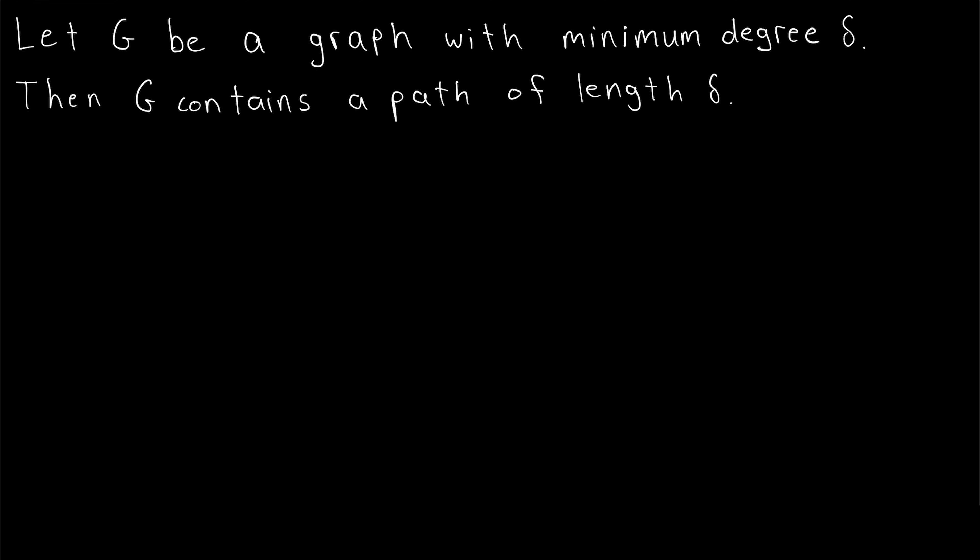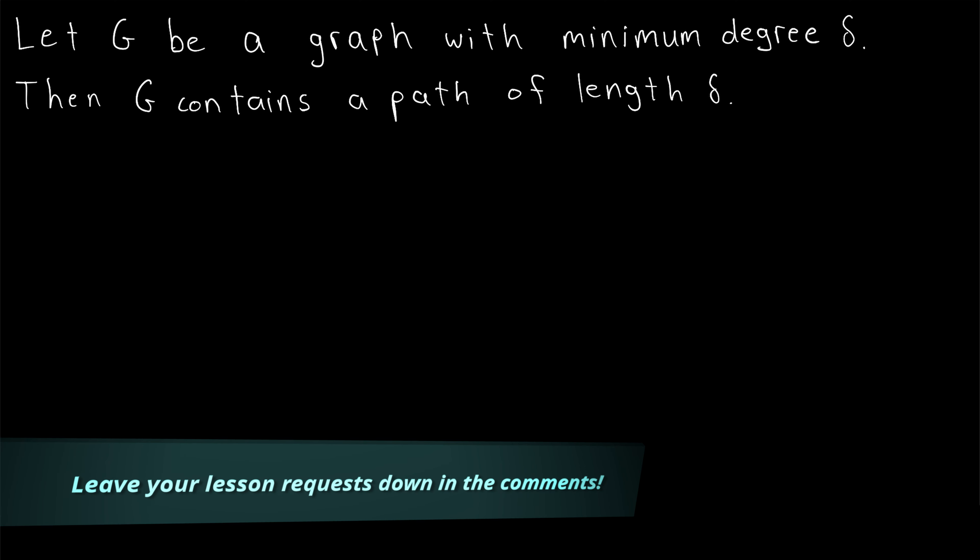So if every vertex in a graph has a degree of at least delta, then the graph must contain a path whose length is equal to delta.